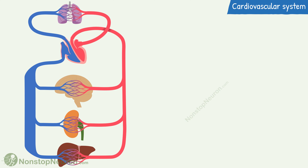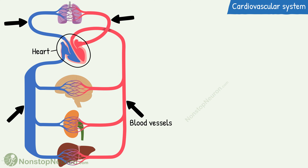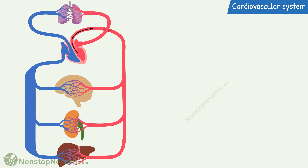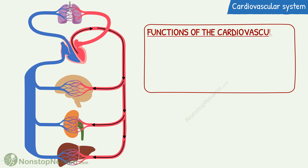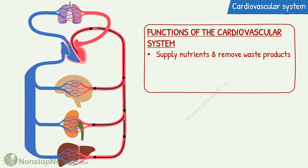The cardiovascular system is composed of heart and blood vessels. Heart pumps blood into the blood vessels. Blood vessels circulate the blood throughout the body. The blood brings oxygen and nutrients to the tissues and removes carbon dioxide and other metabolic waste products. Thus, the main function of the cardiovascular system is to supply nutrients and remove waste products from the peripheral tissues.